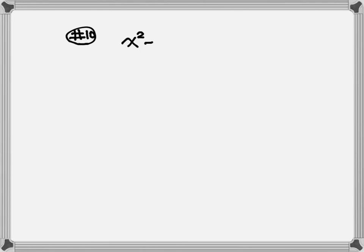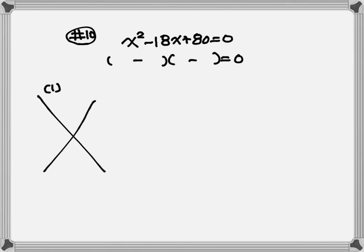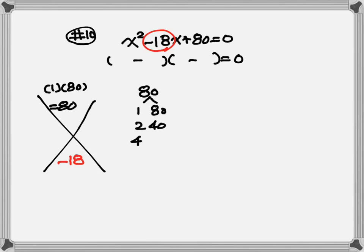Let's look at number 10. We have x squared minus 18x plus 80 equals 0. We're going to factor the trinomial using the X-factor method. Both signs are minus and minus, so let's draw a big X. I'm going to take my first number, multiply my last number, equal to 80. Then bring my middle number, negative 18, down here. Let's find which two numbers multiply to give 80: 1×80, 2×40, 4×20, 5×16, 8×10.